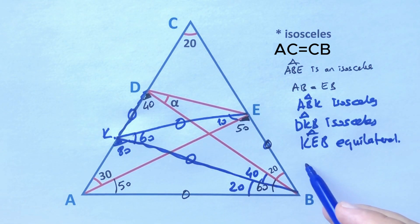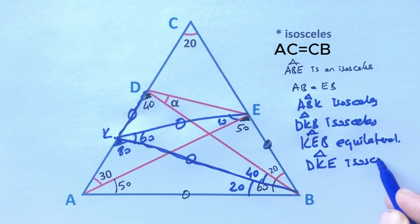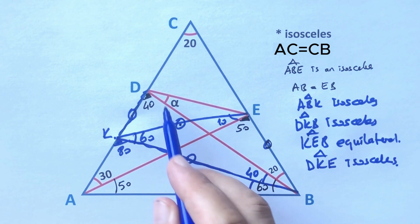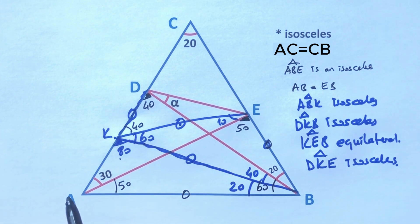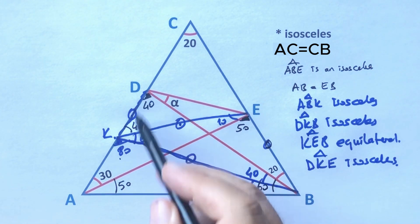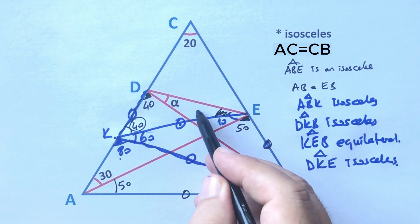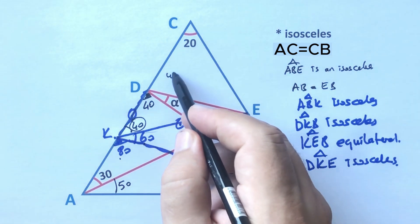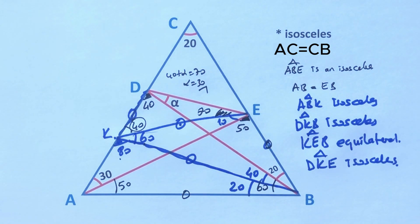Finally, triangle KAE is an isosceles triangle. We know that a straight angle equals 180 degrees, so here must be 40 degrees. If it is 40 degrees, the base angles equal 70 degrees. So 40 plus alpha equals 70 degrees, therefore alpha is 30 degrees.